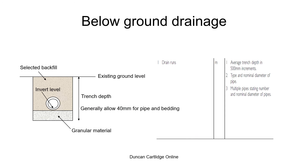The depth of drain trenches between manholes, or manholes and fittings, is given as an average depth for the whole run, separated into increments of 500 millimetres.